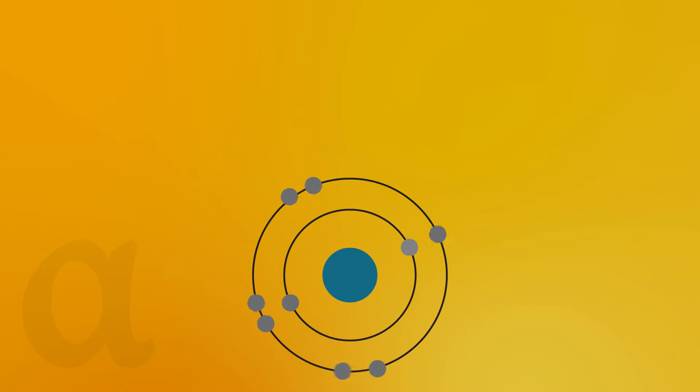So as the alpha goes past the atom, it doesn't need to touch the electron to knock it out. As long as it gets close enough that its electromagnetic attraction can pull on the electron, it can pull it out of the atom. So let's draw a line on the diagram showing how close an alpha needs to be to cause ionisation.